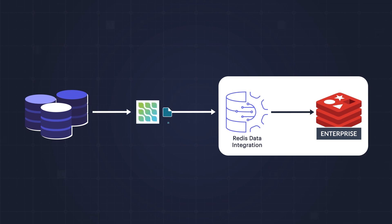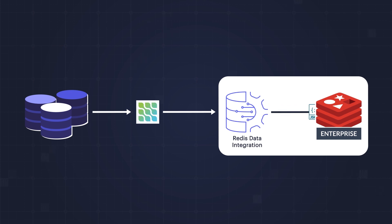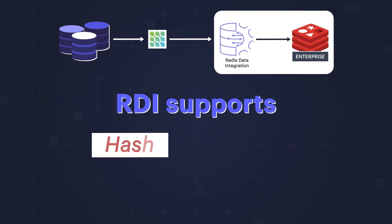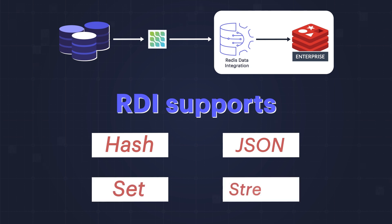Next, batches of data entries are written to streams. Then RDI converts that data from Debezium format to Redis data types. Finally, data is stored in the target Redis database as your preferred Redis data type. RDI supports hash, JSON, set, and streams.